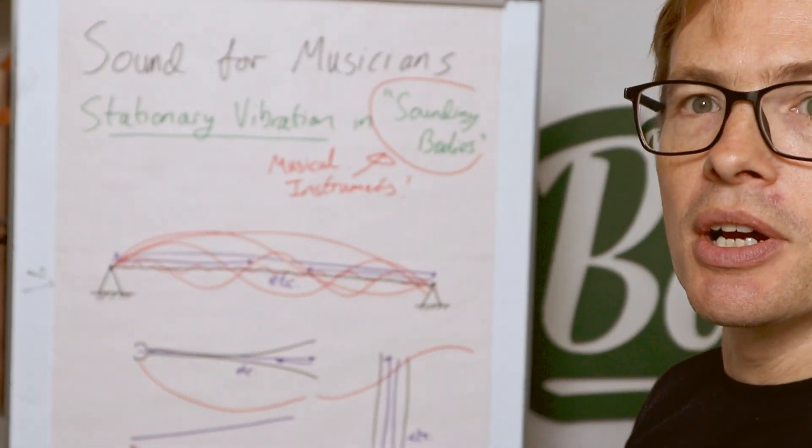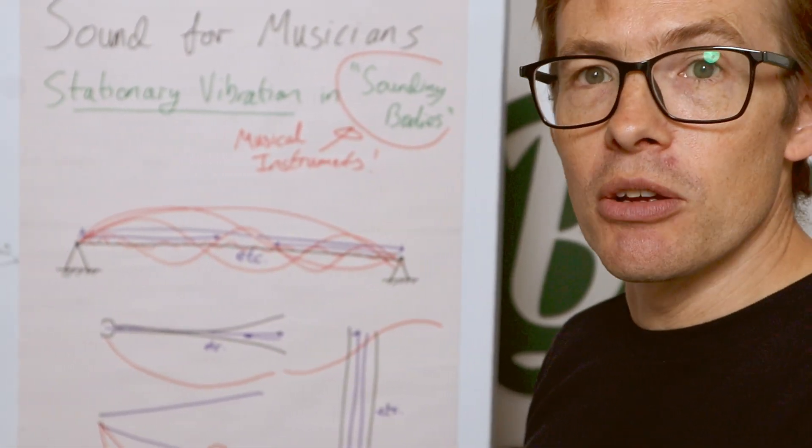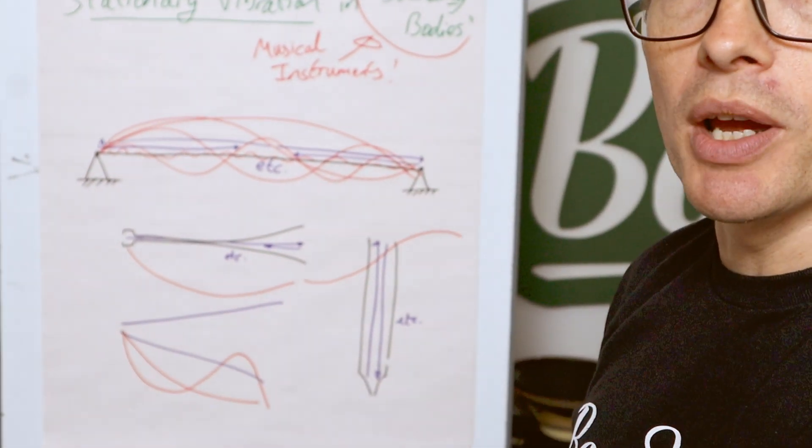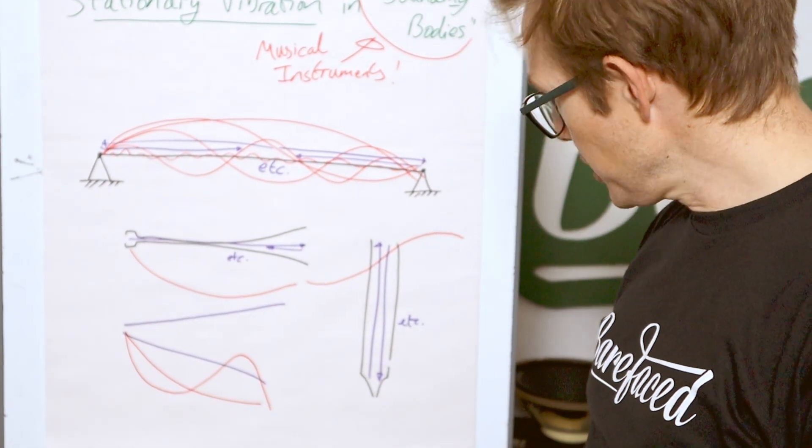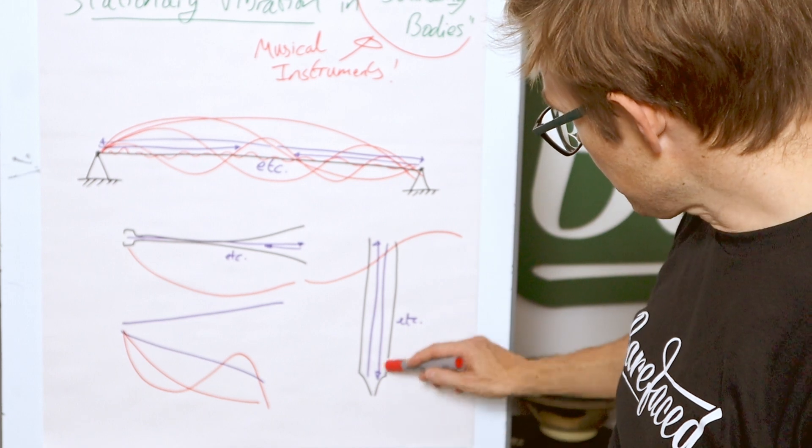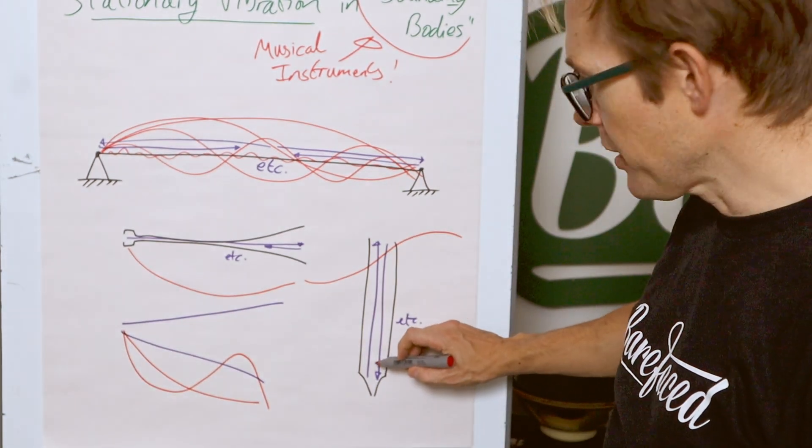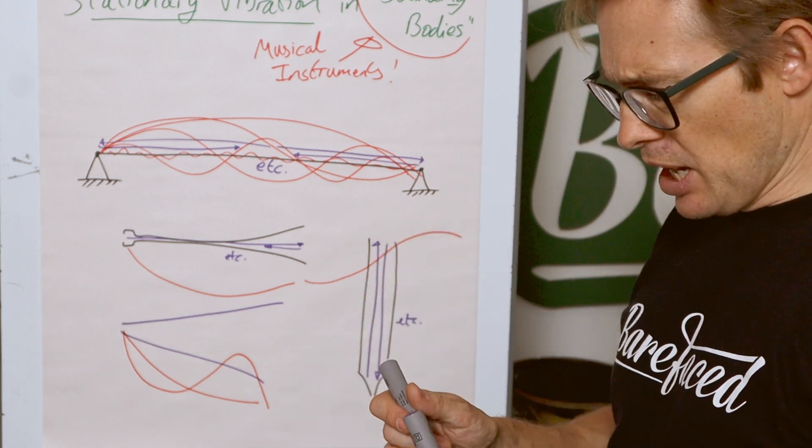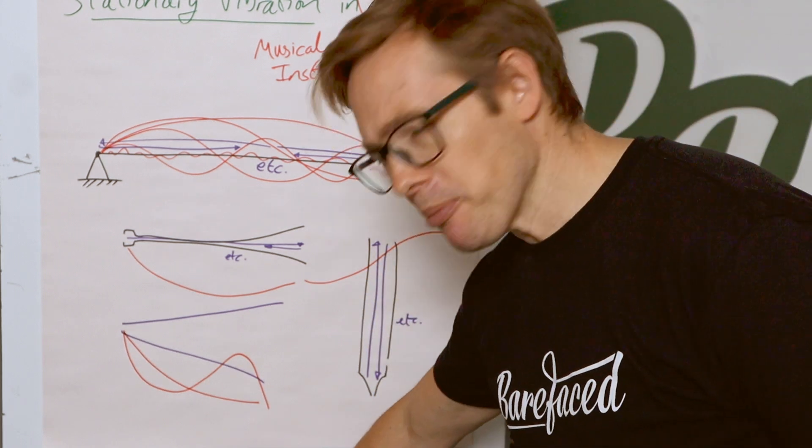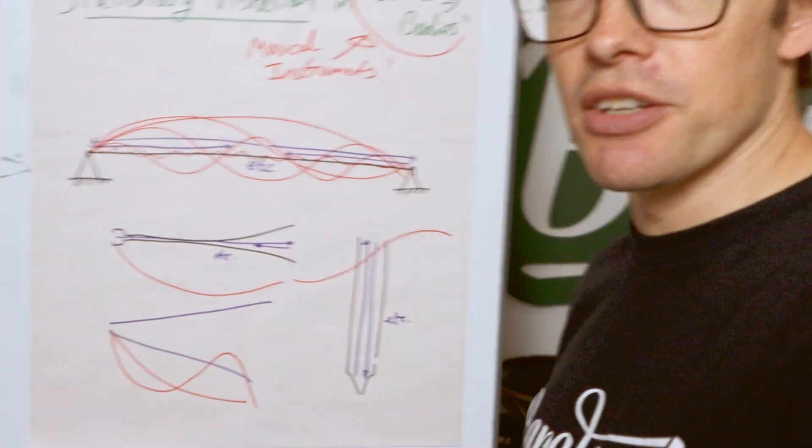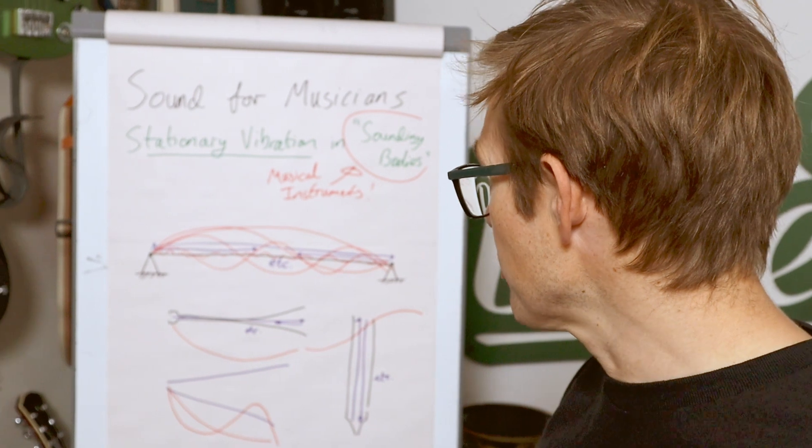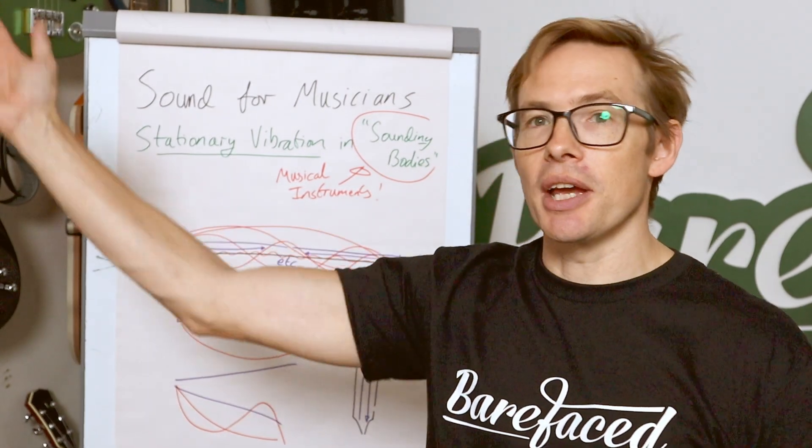That air column is set into stationary vibration and the same happens with a recorder or an organ pipe. It's just the wave is generated in a different point. The point is we'll be going into the details of how musical instruments actually work but what we're looking at is stationary vibration.